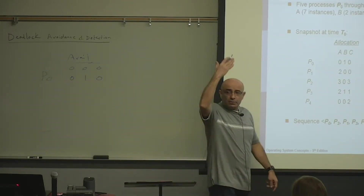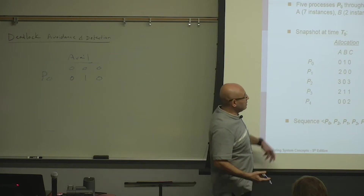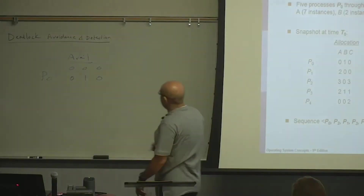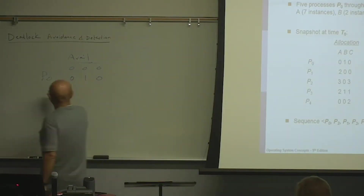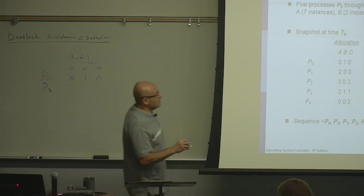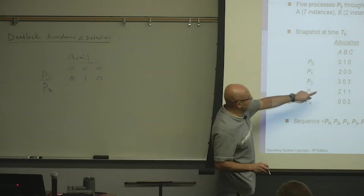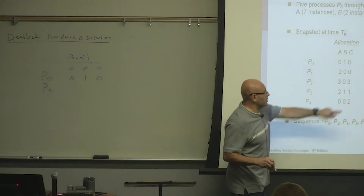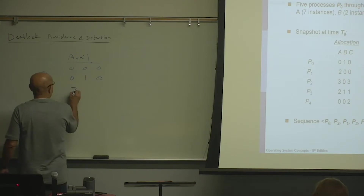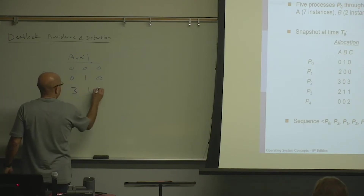Then we scan through the list again. Can we satisfy P1's request? No, we cannot. Can we satisfy P2's request? Yes, definitely. We put P2. After P2 is done, it's going to release three, zero, three. So we will have three, one, three.